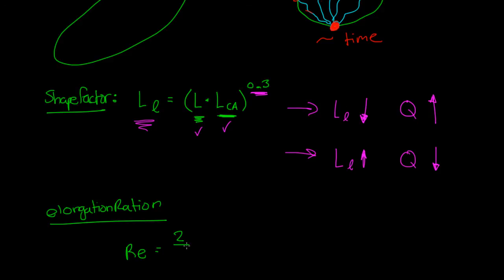That's 2 over L, and remember L is the watershed length, times area, the area of the watershed, over pi, all raised to the 0.5 power. That's the elongation ratio.